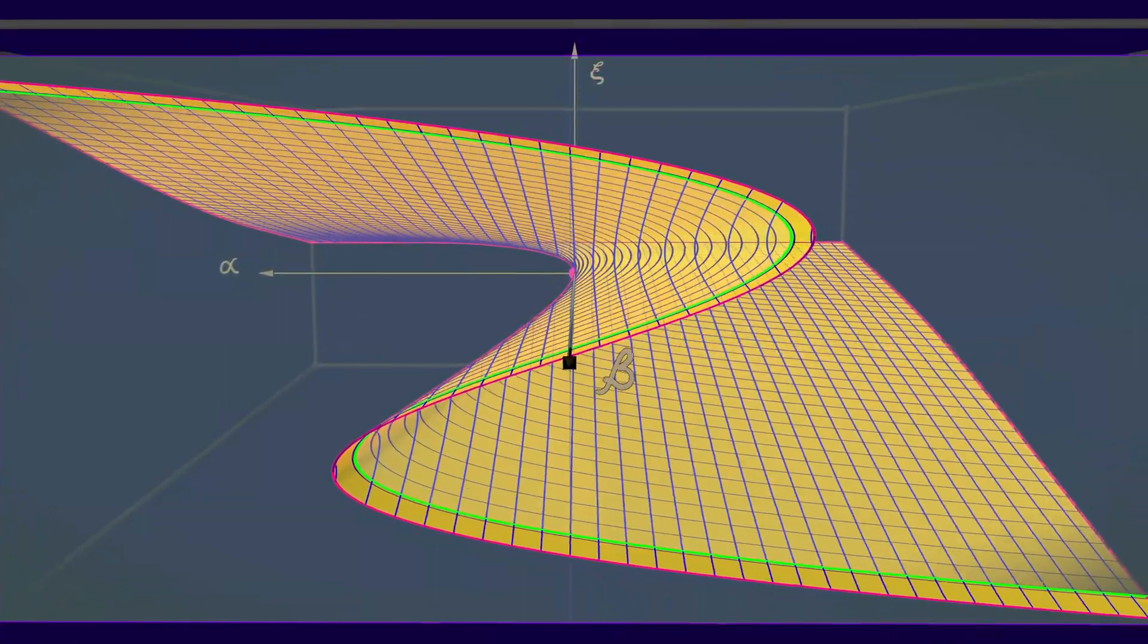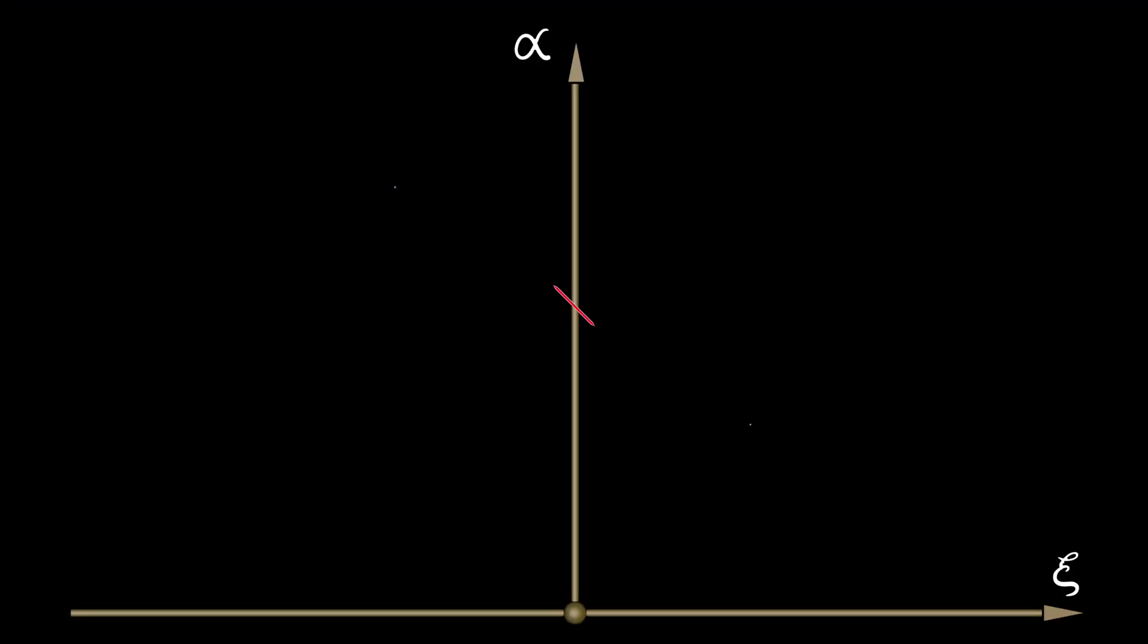And what that looks like is a pair of branches of stable equilibria connected by a middle portion of unstable equilibria.